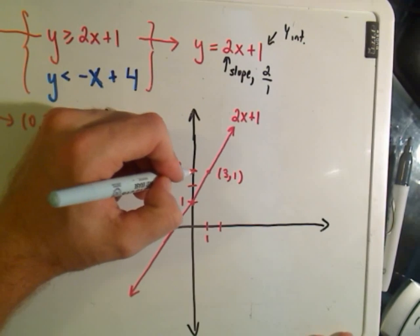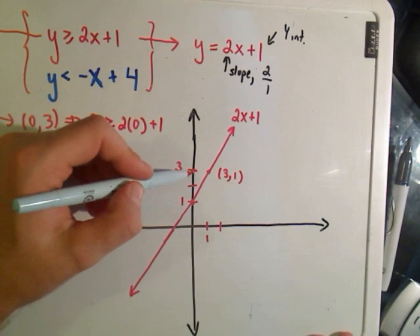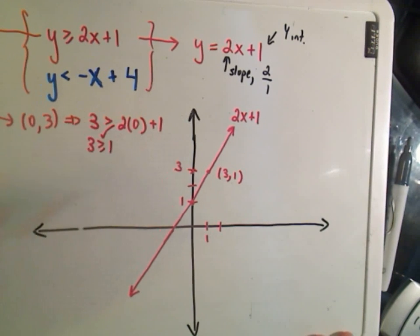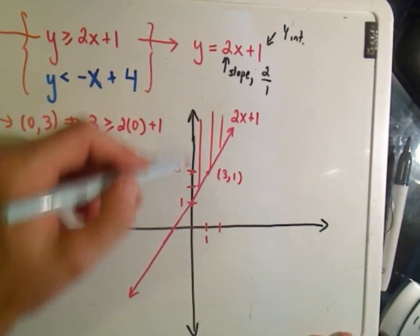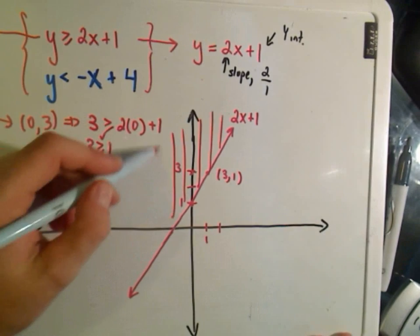So again, I just arbitrarily chose a point off the line. 0, 3 was easy to compute, so that's why I picked that one. It satisfies my inequality. That means I shade the whole region above my line.